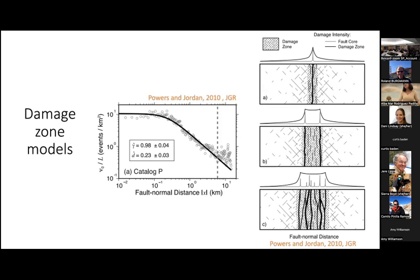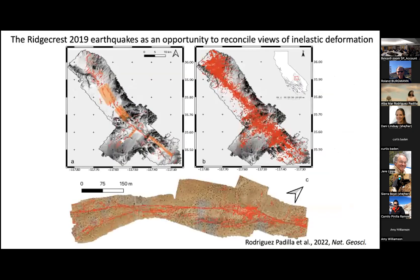A challenge with damage zone studies is that the data sets have different resolutions and they also span different spatial and temporal scales. For example, when we characterize the damage zone in the geological record, the fractures that are there - we don't know how many earthquakes they account for. We don't know whether they may have moved seismically during the post-seismic or interseismic periods. And to try to reconcile all of these different spatial-temporal scales, we came to the 2019 Ridgecrest earthquakes in Southern California, which were super heavily monitored from geologic, geodetic and seismological observations.